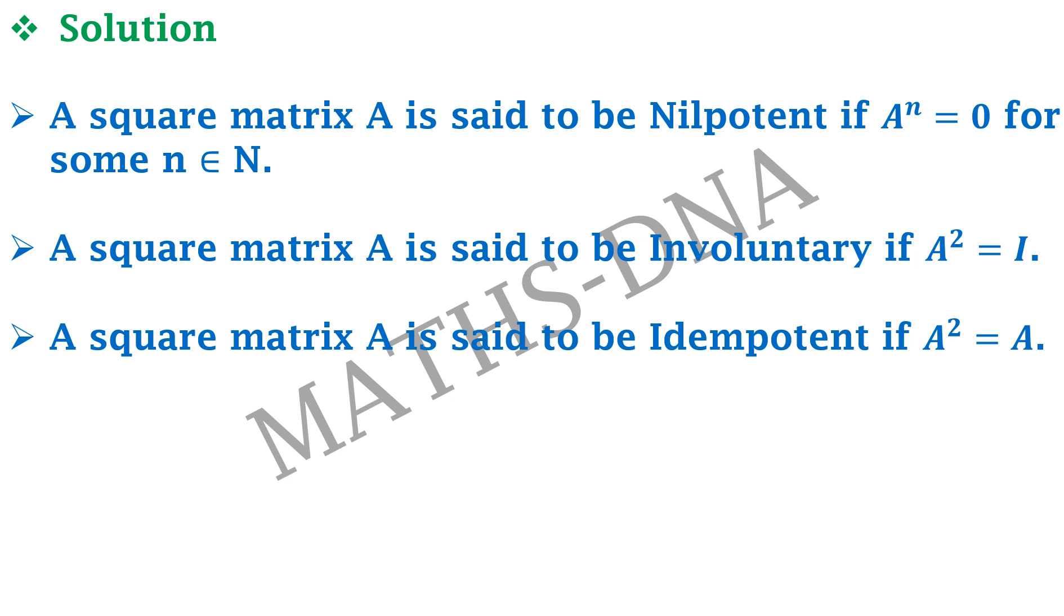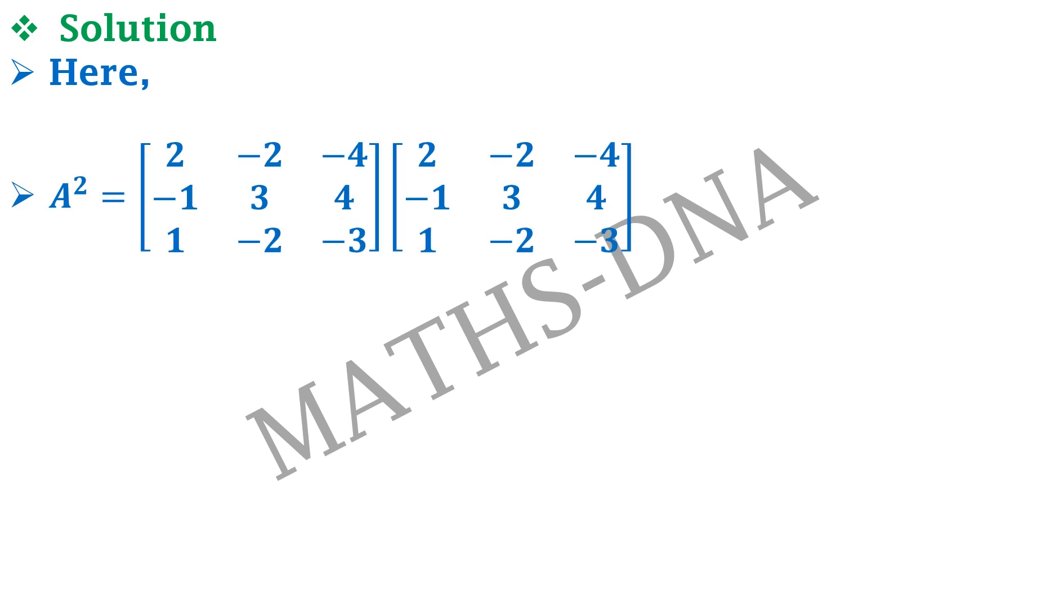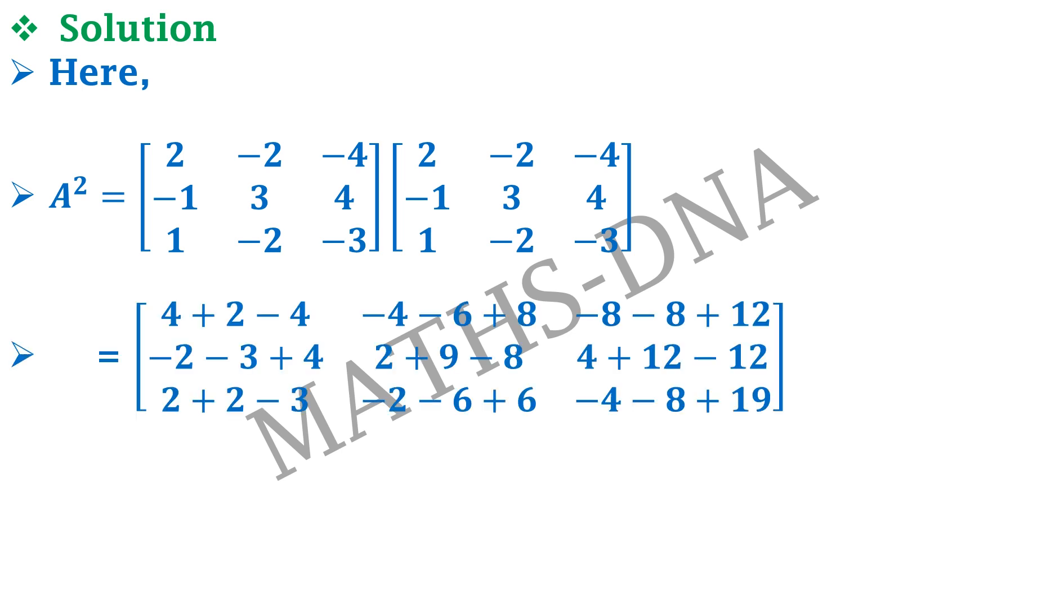Now, as you are clear with the definitions, moving on to the question. The given matrix A was 2, minus 2, minus 4, minus 1, 3, 4 and 1, minus 2, minus 3. We are multiplying it with itself and getting A square. Now, you know the basic matrix multiplication, so I am not going in this detail. And you get finally A square equals to again A, which means that the given matrix is idempotent and the correct answer is option C.